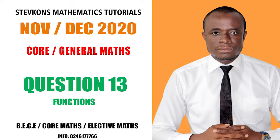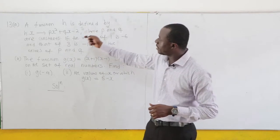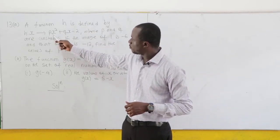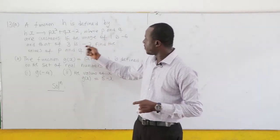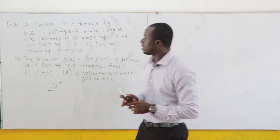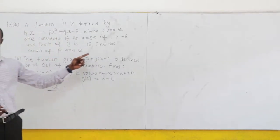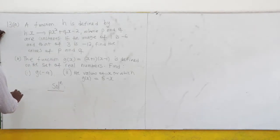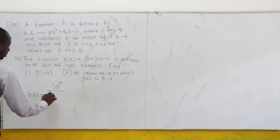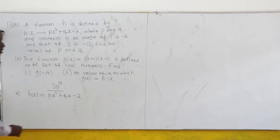November 2020, question number 13e. A function h is defined by h(x) = px² + qx - 2, where p and q are constants. If the image of 1 is negative 6 and that of 3 is negative 12, find the values of p and q. This is a very trivial question. We have the function h(x) = px² + qx - 2.